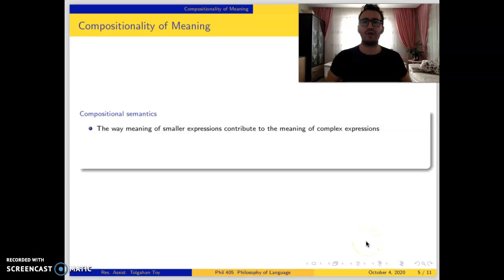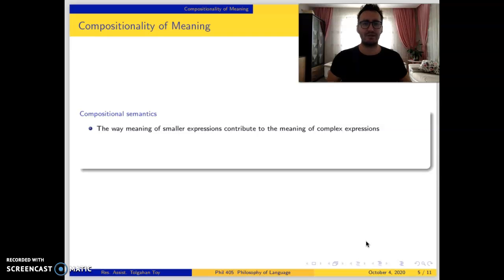An important notion in the philosophy of language is the compositionality of meaning. Compositional semantics is interested in the way meaning of smaller expressions like words or phrases contribute to the meaning of complex expressions like sentences. With a given finite set of word meanings or phrase meanings, a semantic system is expected to understand and generate the meaning of any given sentence.